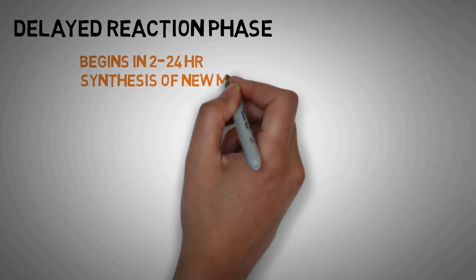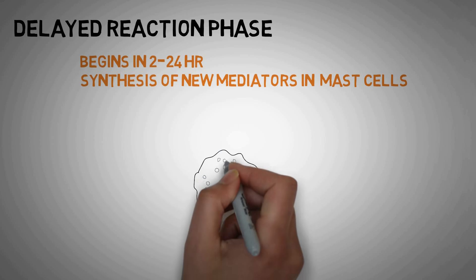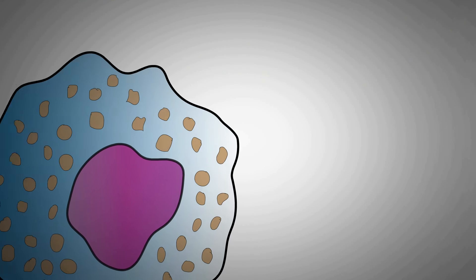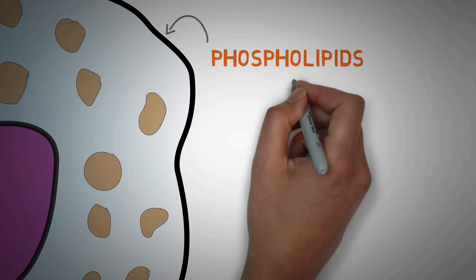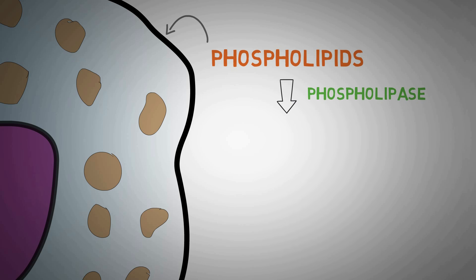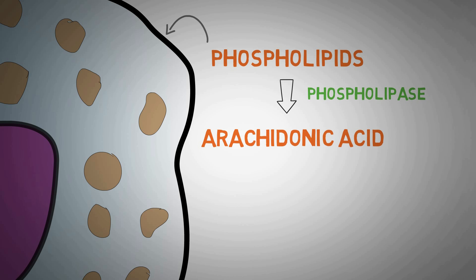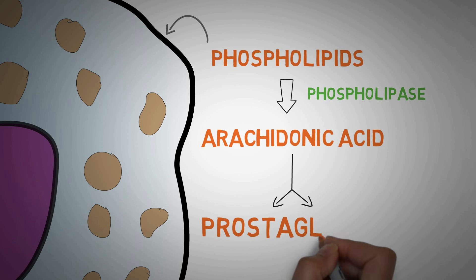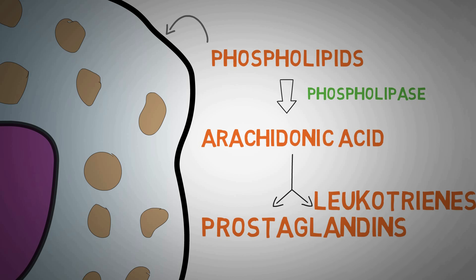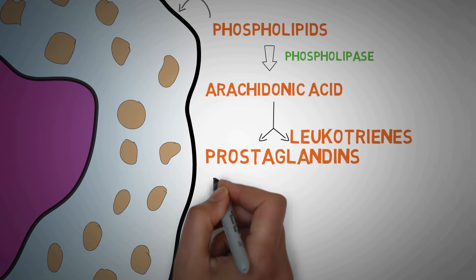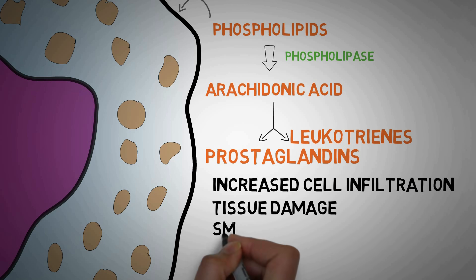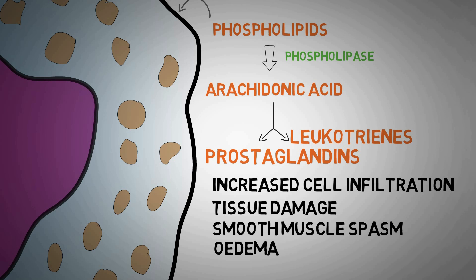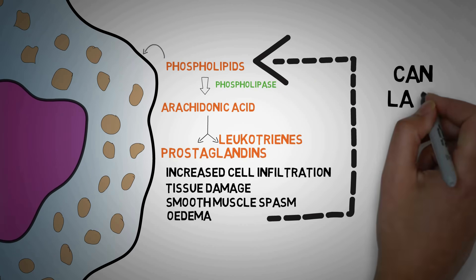The late reaction phase develops hours after the initial exposure to the allergen and involves synthesis of new chemical mediators in the mast cells. The membranes of the mast cells have phospholipids. In type 1 reaction, an enzyme known as phospholipase is activated, which converts phospholipids in the membrane to arachidonic acid. This is the parent compound from which numerous prostaglandins and leukotrienes are synthesized. These newly synthesized chemicals lead to infiltration of more inflammatory cells at the site of allergy, tissue damage, smooth muscle spasm, and edema that can last for days.